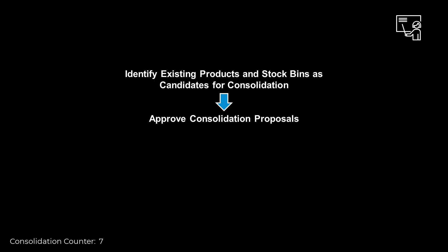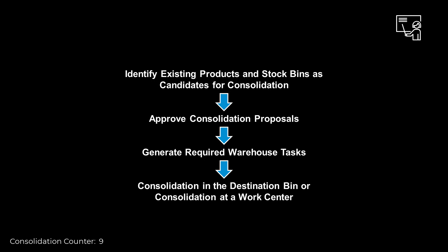Before we run through a couple of examples, we will briefly explain the concept behind stock consolidation. The first step in stock consolidation is to identify consolidation candidates. Stock consolidation groups the stock items to consolidate according to attributes that you define. EWM will generate a list of consolidation proposals from which you can choose the ones to be performed. For the selected proposals, EWM generates the number of warehouse tasks needed for the consolidation to happen. Consolidation takes place either in the destination bin or at a consolidation work center.